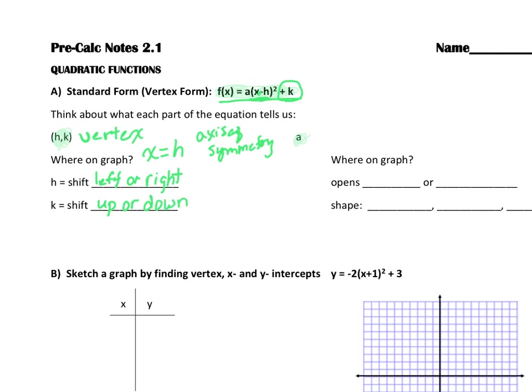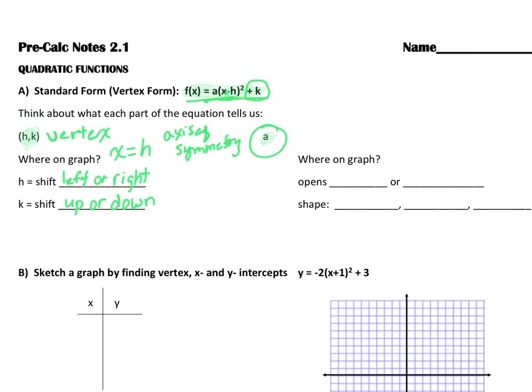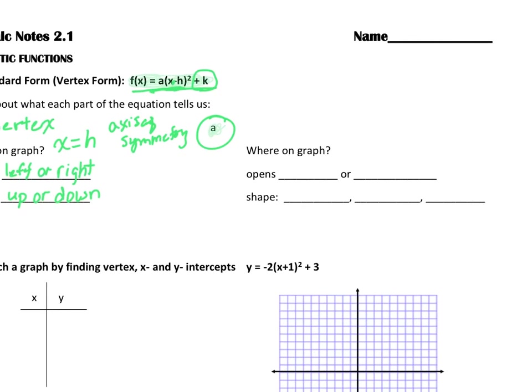We also need to think about what the a value out front tells us, and remember that tells us whether we are going to open up or down on the graph. And the a value tells us whether we're going to have a normal or a regular shape, or if the a value is greater than one it will be skinnier, or wider if the a value is something between zero and one.